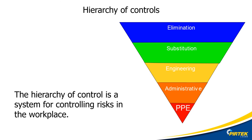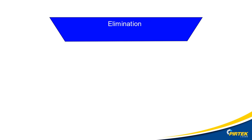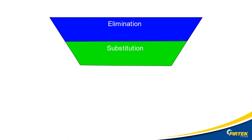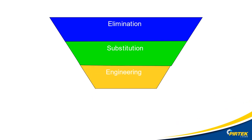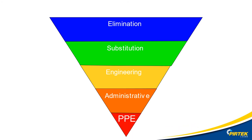Elimination — being the highest level of protection — involves eliminating or removing the risk completely. Substitution — can we change the product with something else? Engineering controls — can we redesign the infrastructure or use mechanical devices to solve the problem? Administrative controls — can we use training or enforce certain procedures or techniques to solve the problem? Personal protective equipment, PPE — could PPE be used in conjunction with other controls to solve the problem? PPE is the lowest level of protection.